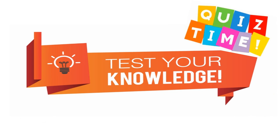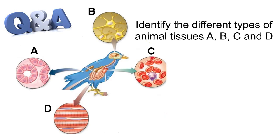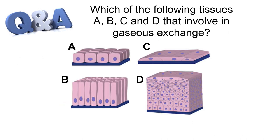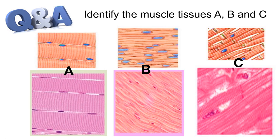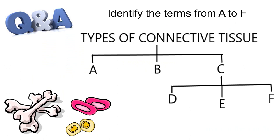It's quiz time. You may check your understanding by answering questions on the next five slides. Identify the types of animal tissues A, B, C, and D. Which of the following tissues is involved in gaseous exchange? Try to find out the labels A to G. Name the muscle tissues A, B, and C. Let's review the types of connective tissues.